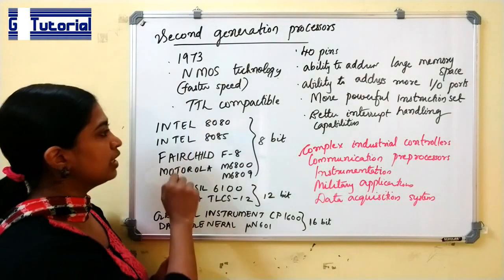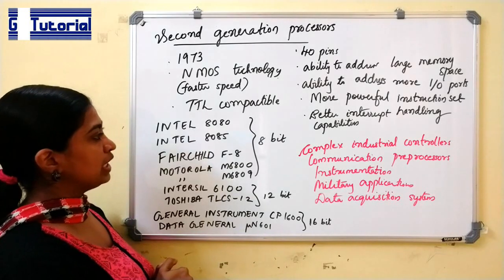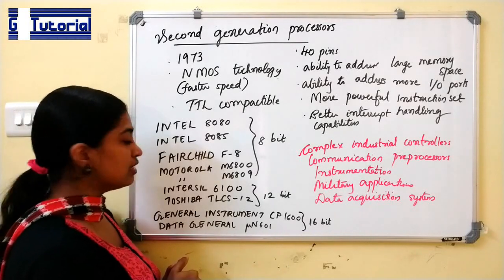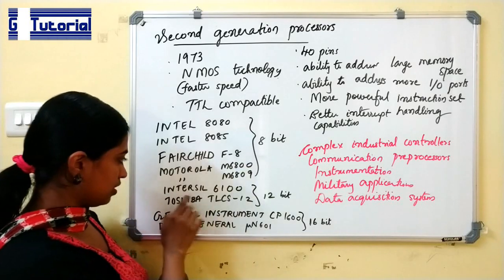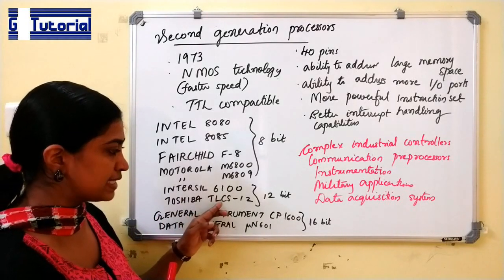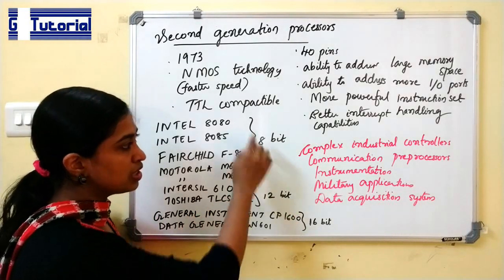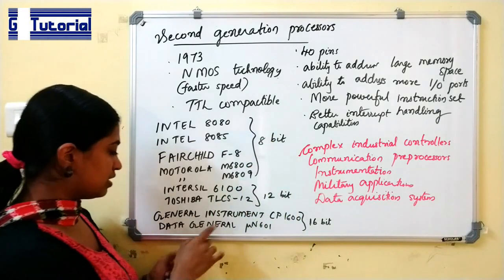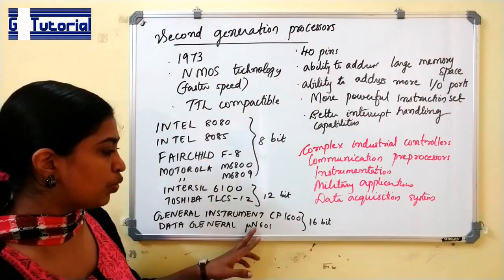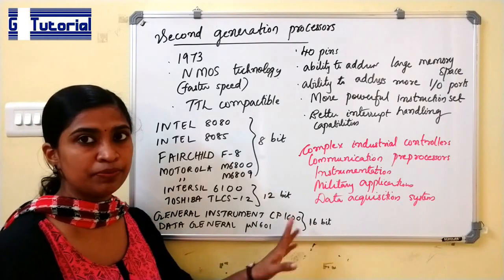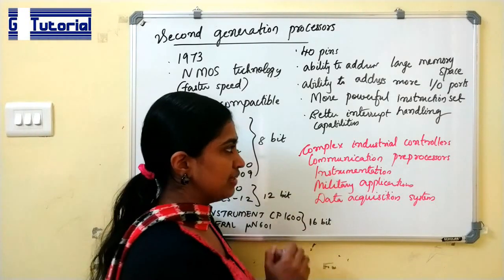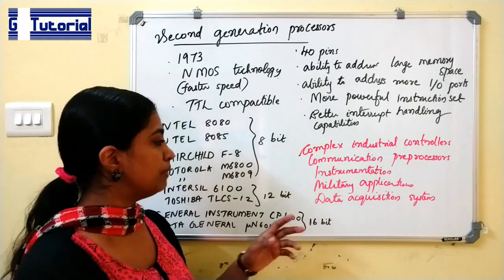Some second generation processors are Intel 8080, Intel 8085, Intel 6100, and Toshiba TLCS-12. The last two are 12-bit processors, while Intel 8080 and 8085 are 8-bit. General Instrument CP-1600 and Data General MU-N601 were 16-bit processors. Applications of second generation processors included complex industrial controllers, communication preprocessors, instrumentation, military applications, and data acquisition systems.